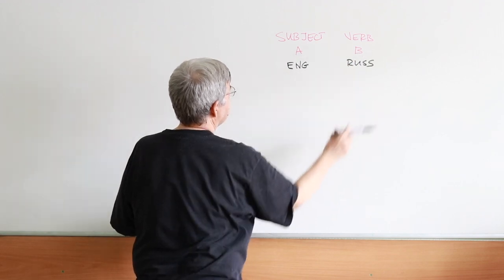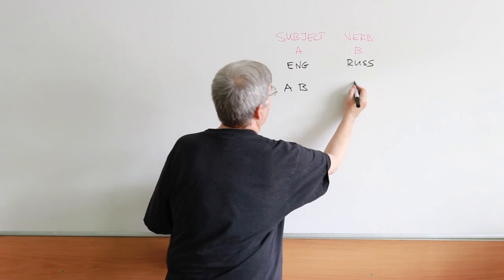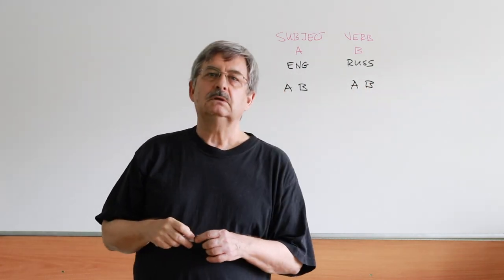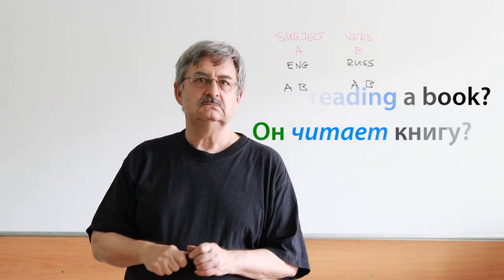Subject is A, verb is B. He is reading. Он читает. Let's make it a question. Is he reading a book? Он читает книгу? Okay.